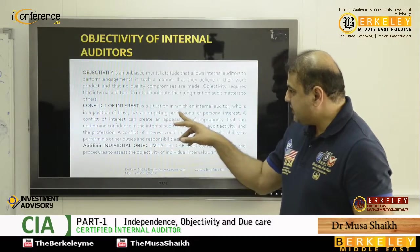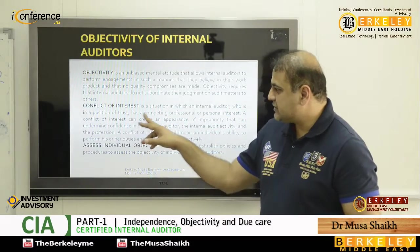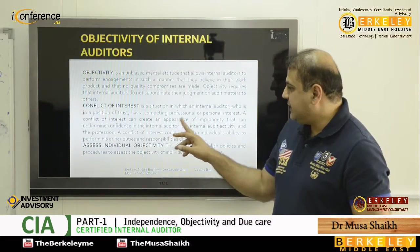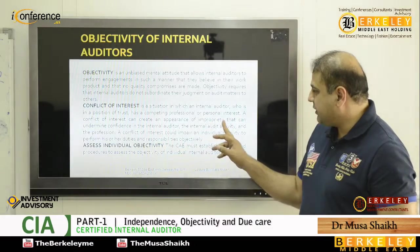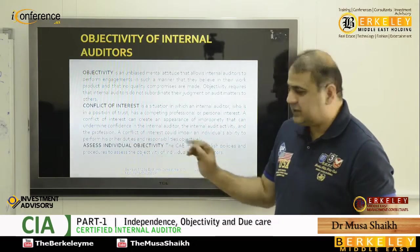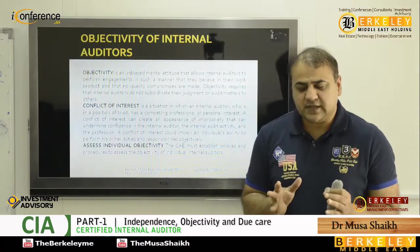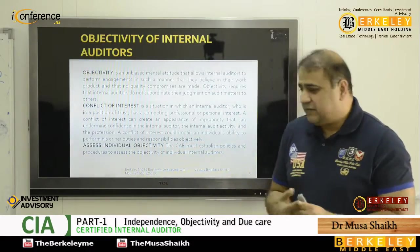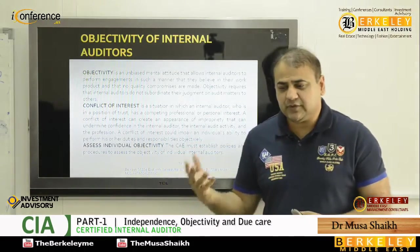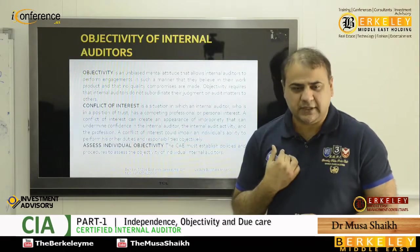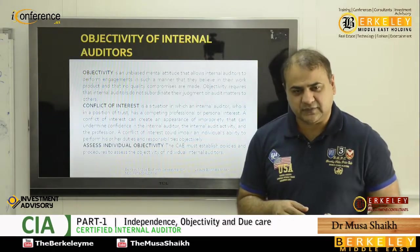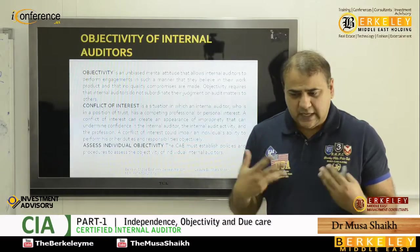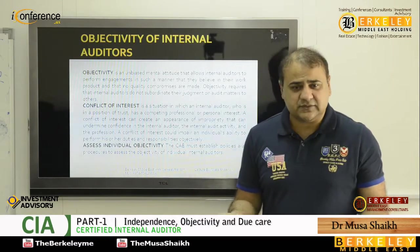It is a situation in which an internal auditor who is in a position of trust has a competing professional or personal interest. A conflict of interest can create an appearance of impropriety that can undermine confidence in the internal auditor. For example, if the procurement head is purchasing from my company and I am also the internal auditor of that company, even if I say everything is according to the rules, a third party will question the arrangement — because it does not appear logical or fair.